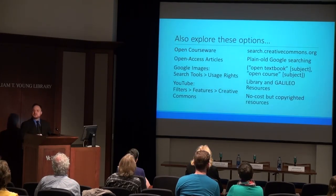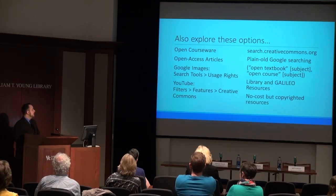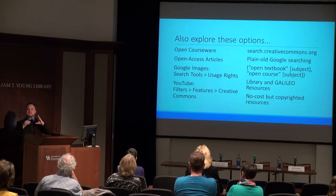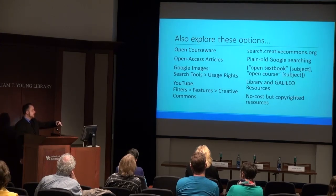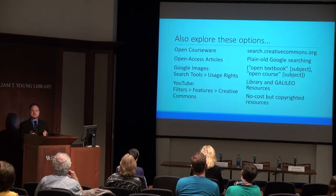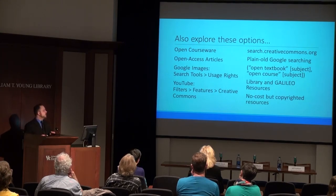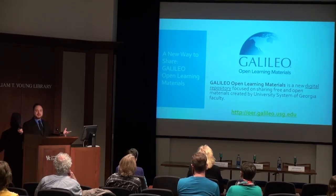There are plenty of other options too. OpenCourseWare — MIT has a whole bunch of open courses available since about 2004. Open access articles are a really big deal, especially if you're teaching a grad-level course. On Google Images, you can click Search Tools and Usage Rights, which connects directly to machine-readable versions of Creative Commons licenses, so you can search for reuse or modification. Same with YouTube — Filters, Features, Creative Commons. search.creativecommons.org is a hub for different types of media, great for finding images across different sites. Google searching can totally work if you just search for an open textbook in quotes with a subject. Also look at library resources and no-cost-but-copyrighted resources to supplement what you're doing.